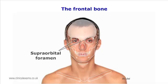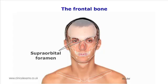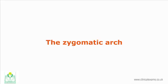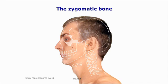The frontal bone contains the two supraorbital foramina, located superiorly and slightly medially on the supraorbital margins. These house the supraorbital nerve, a branch of the trigeminal nerve.